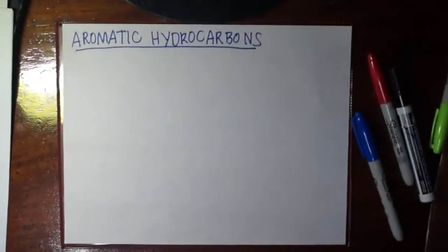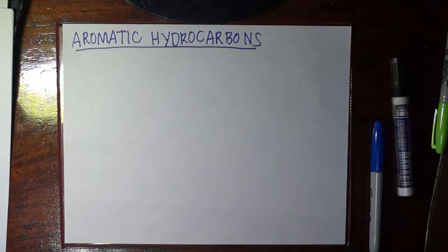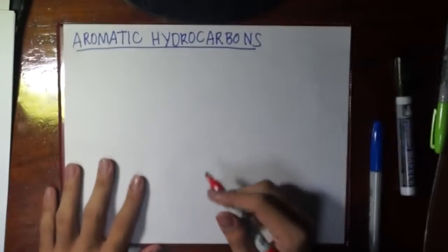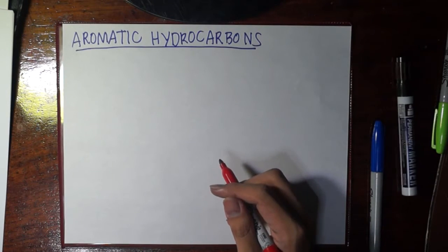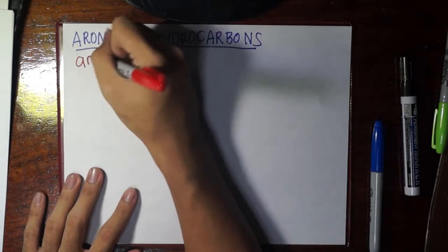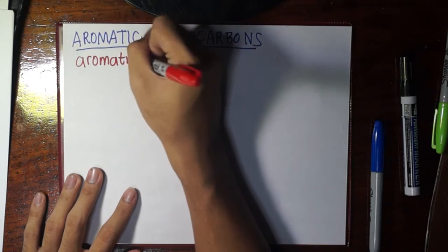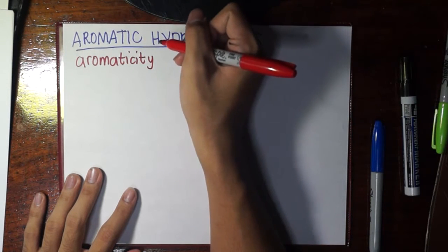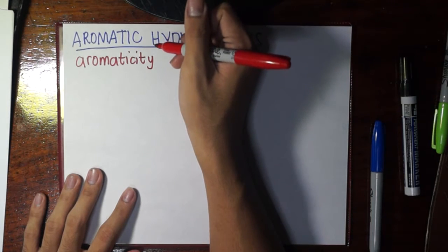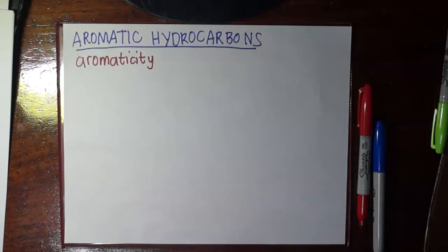In this video we will be talking about the last general class of hydrocarbons: aromatic hydrocarbons. Technically they are also unsaturated, but they have a certain property — aromaticity — that requires several factors in order for us to say that a certain compound is indeed aromatic. When we have aromatic hydrocarbons, most of us would probably recall just one molecule, and that is benzene.